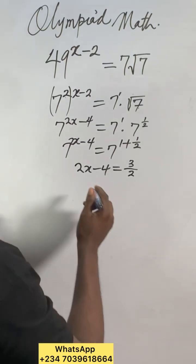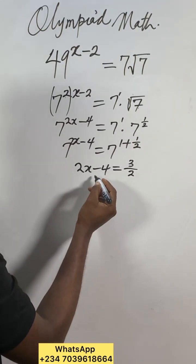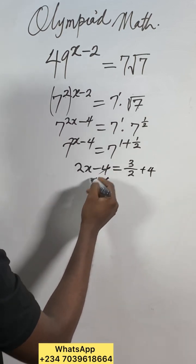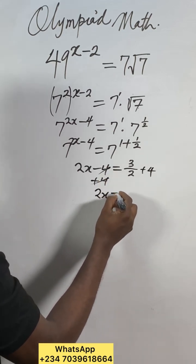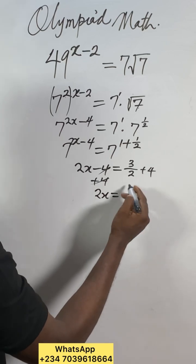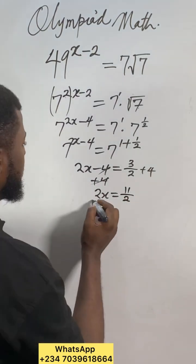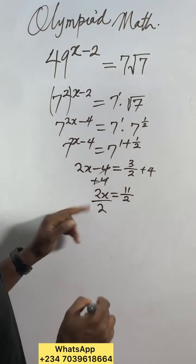You understand? So carry this 4, add 4 to both sides. This will cancel, and we'll have 2x equal to 3 over 2 plus 4, which will give you 11 over 2. Now to find x, divide both sides by 2.